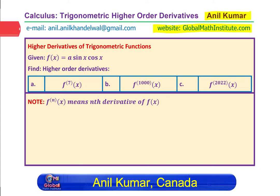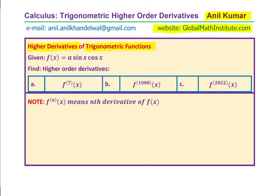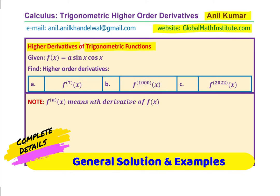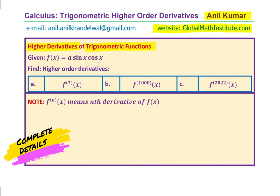In this video, we will consider a very important question based on higher derivatives of trigonometric functions. The function given to us is A sin x cos x and we need to find the seventh derivative, thousandth derivative and twenty-twenty-two derivative. You can always pause the video and answer the question. We will discuss complete method of understanding how to solve similar questions.